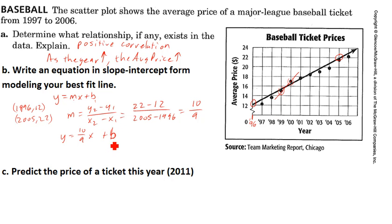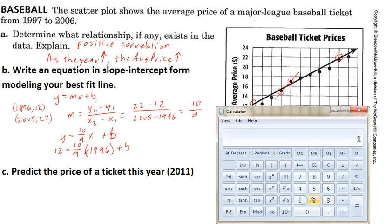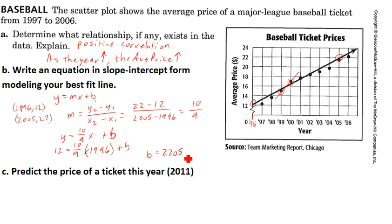So let's solve for the y-intercept by plugging in a point for x and y. I'll use my first point: 12 equals (10/9) times 1996 plus b. So (10/9) times 1996 equals approximately 2217.777. Then b equals 12 minus 2217.777, which gives b equals negative 2205.777. So our equation is y equals (10/9)x minus 2205.777.